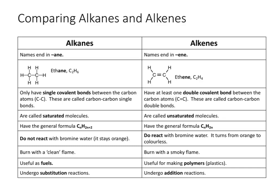In this video we're going to have a quick look at comparing the alkanes and the alkenes, summarizing that into this table here. The first thing about alkanes is that their names all end in '-ane' (A-N-E). As you can see, we've got alkane and ethane below, and we also have the displayed formula of ethane with its molecular formula C2H6.